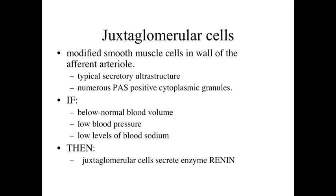What's found within these granules is the enzyme renin. These modified smooth muscle cells monitor normal blood volume, blood pressure, and respond to levels of blood sodium. All of these are related to blood pressure. In the presence of below-normal blood volume or below-normal blood sodium — which affects fluid balance — low blood pressure results. In the presence of low blood pressure, these juxtaglomerular cells secrete the enzyme renin.